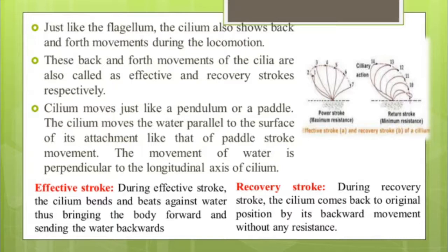Just like flagella, cilia also show back-and-forth movements during locomotion, called effective and recovery strokes respectively. The cilium moves like a pendulum or a paddle, moving water parallel to the surface of its attachment in a paddle-stroke movement perpendicular to the longitudinal axis of the cilium. During the effective stroke, the cilium bends and beats against the water, bringing the body forward and sending water backwards. During the recovery stroke, the cilium returns to its original position by a backward movement without resistance.